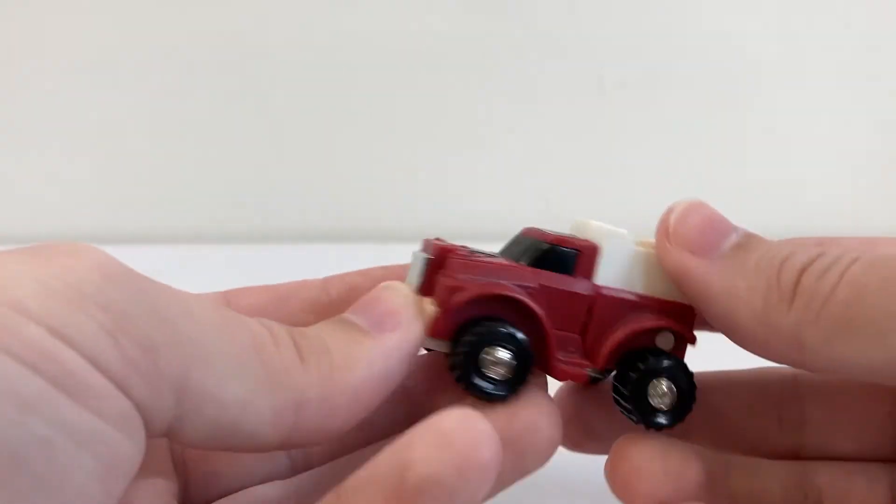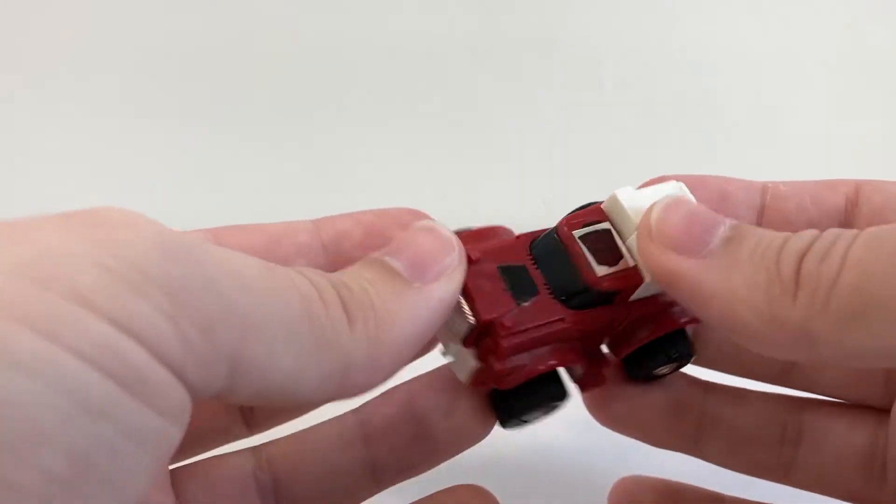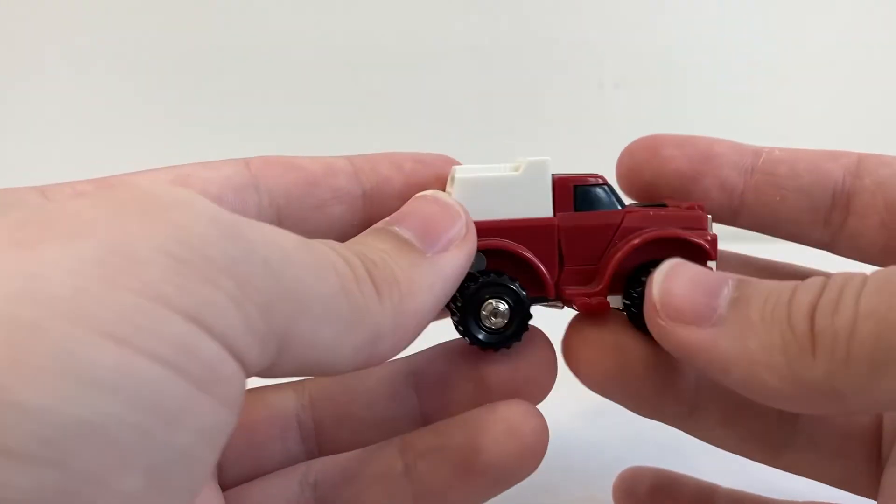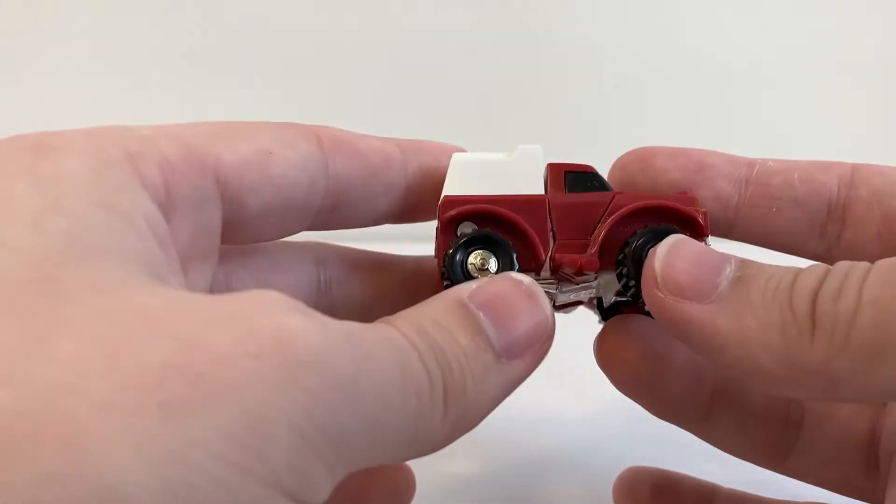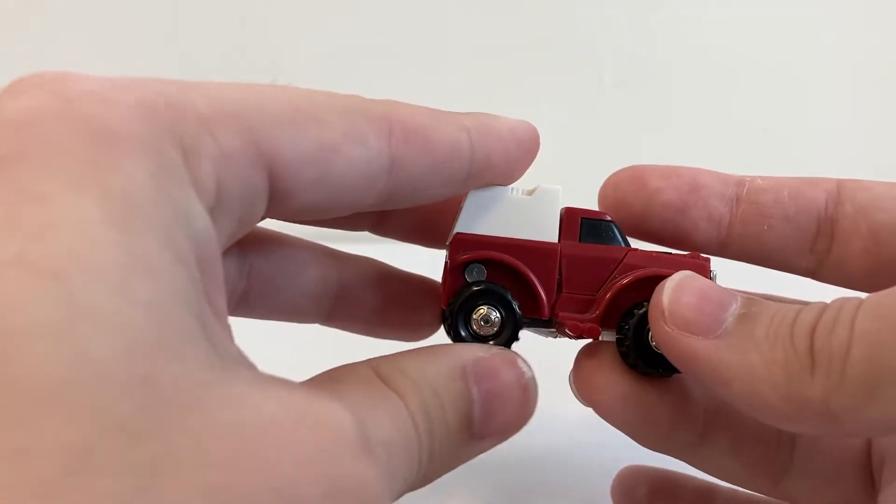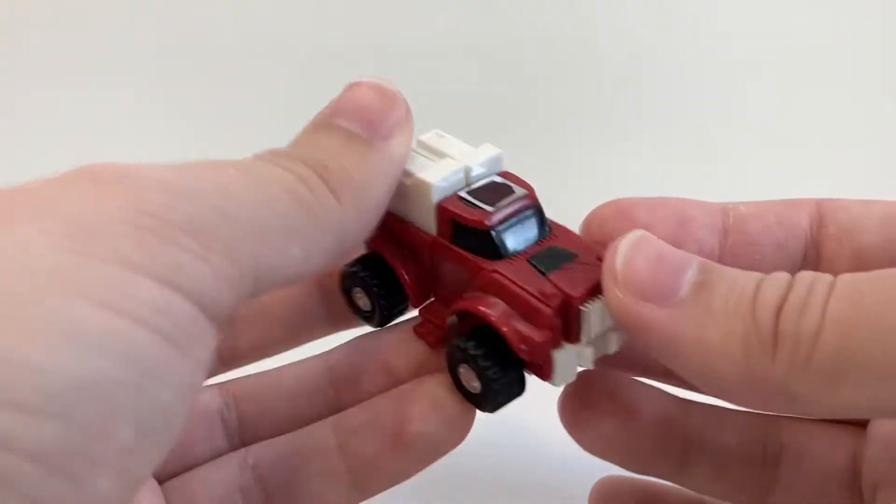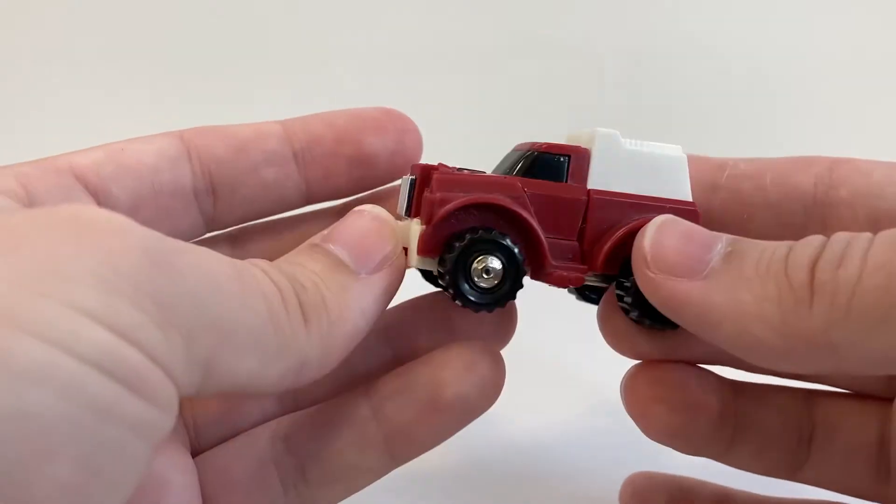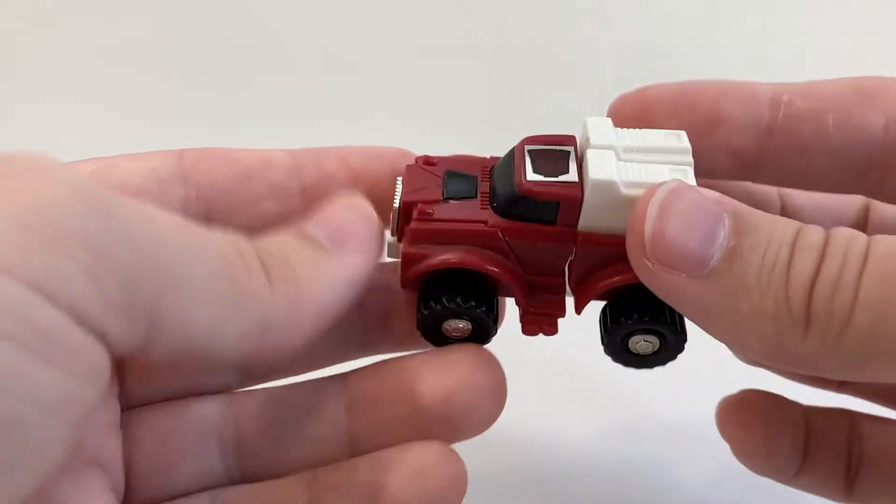Swerve was one of the 1986 mini-bots, a repaint and slight remold of Generation 1 Gears, who was one of the 1984 mini-bots. It turns into a little red and white truck here. Very cute.